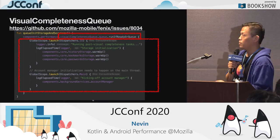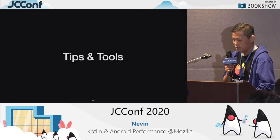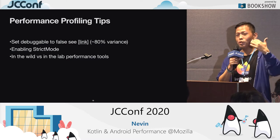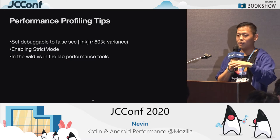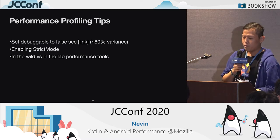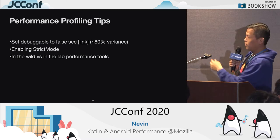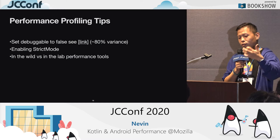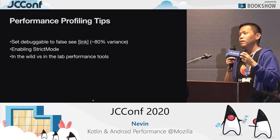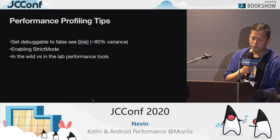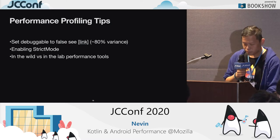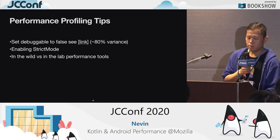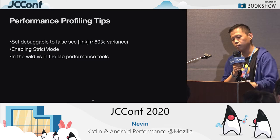Now I'm going to talk about tips and tools. First thing: set debugger to false. We found this very important because when we did profiling and looked at the results, they were kind of shaky — sometimes this, sometimes that. A talk from Google says to set debugger to false, because when debugger is set to true, there will be a lot of debugger behavior — for example, 'wait for debugger.' This gives you an unstable profiling result, and those results won't help you get a precise solution.